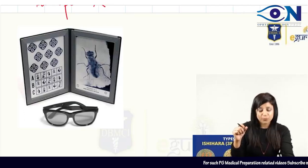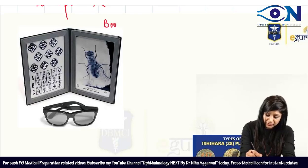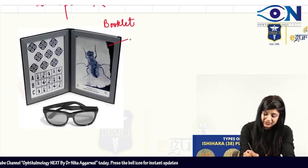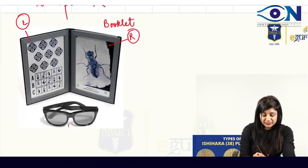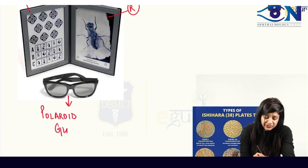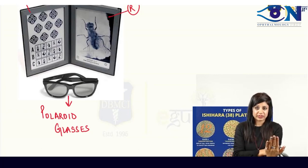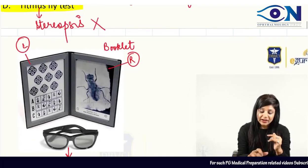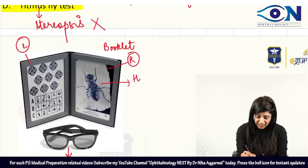Now, some important details about the Titmus fly test: it consists of a booklet which has a right side and a left side. The patient has to first wear polaroid glasses. With these polaroid glasses on, the patient will look at the booklet. The right side has the house fly and the left side has circles inside a rhomboid.